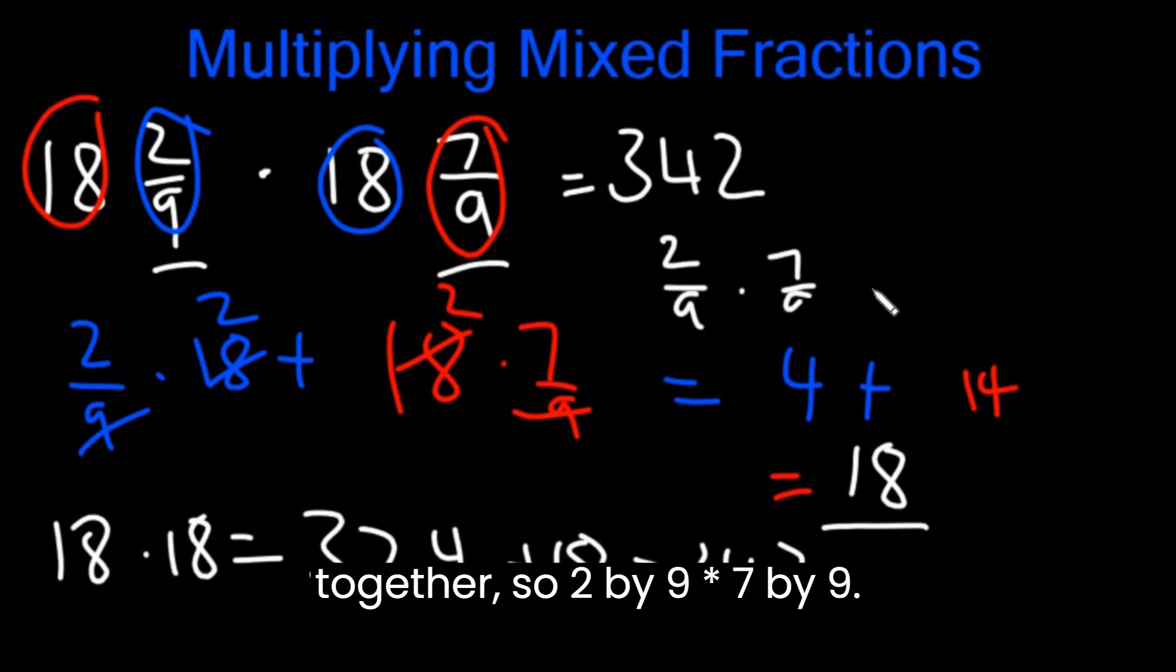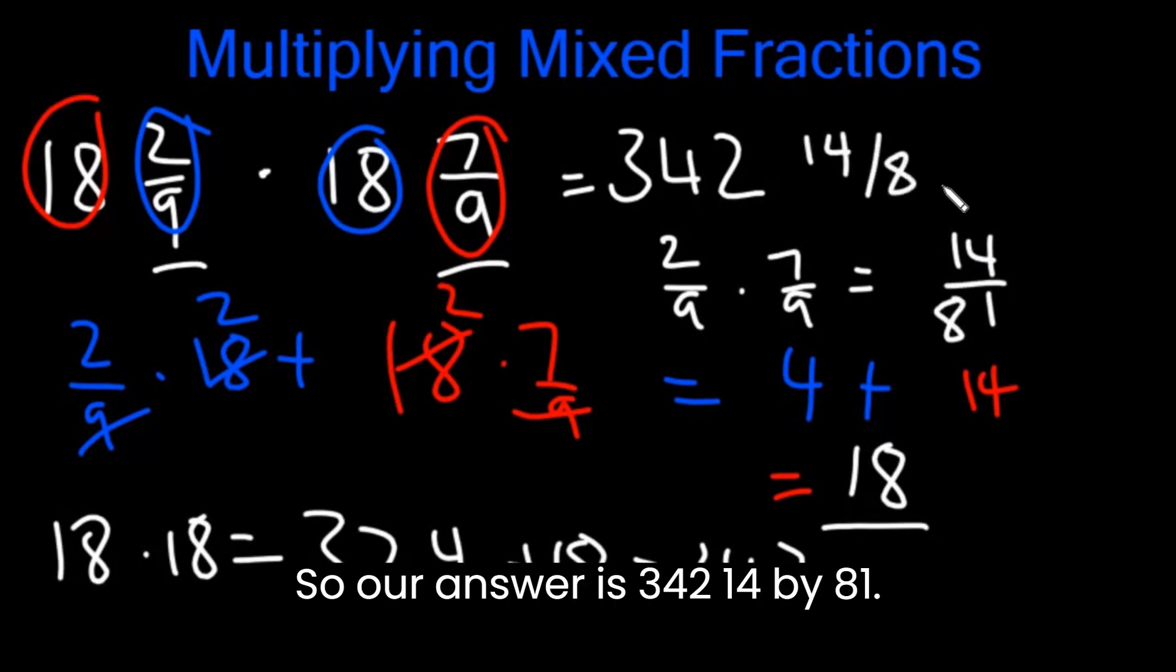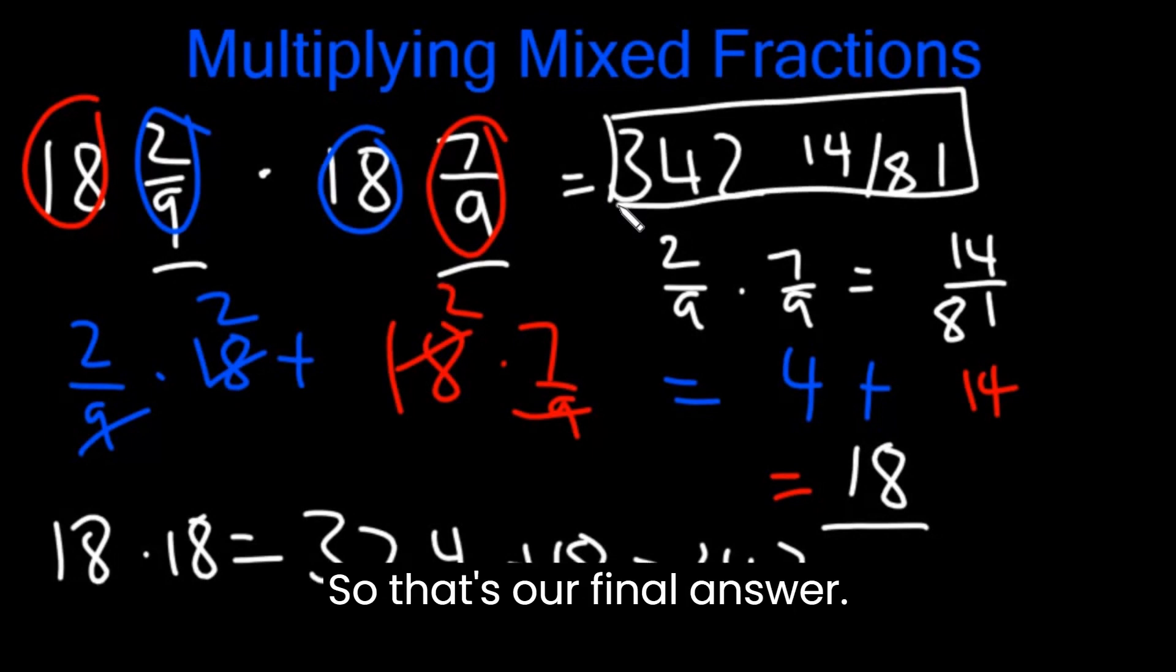Then we will multiply the fraction parts together. So 2/9 times 7/9. This is 14/81. So our answer is 342 14/81. So that's our final answer.